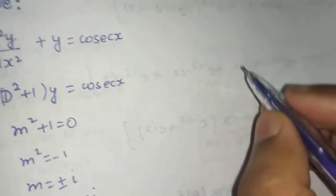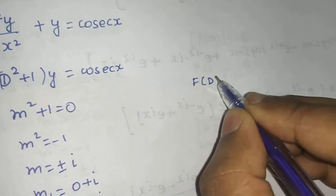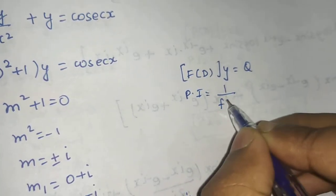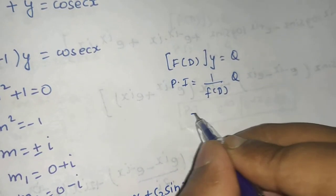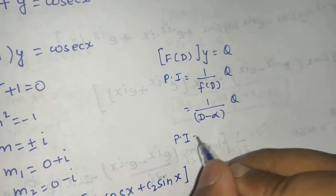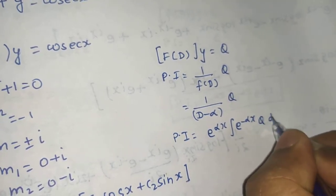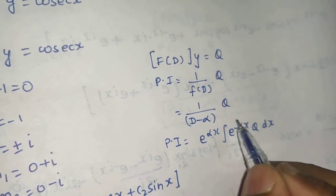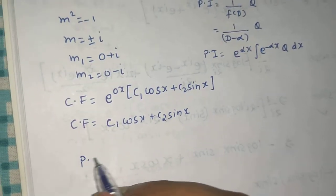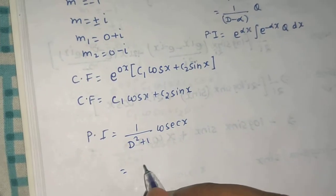Now for the particular integral, let's recap the rule. If f(D)·y = Q, then the particular integral is (1/f(D)) operating on Q. We factor into linear factors, and each factor (D - α) operating on Q gives e^(αx) · ∫e^(-αx) · Q dx — retaining the same sign inside and using the opposite sign outside. So the particular integral is 1/(D² + 1) operating on cosec x.